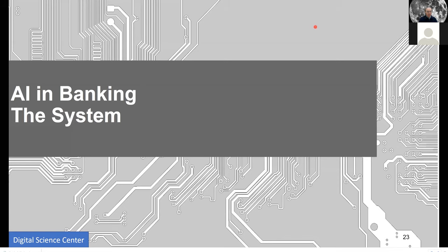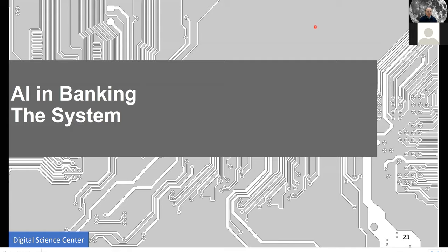In banking, we have three areas: the consumer-facing front end, the middle office — probably where the richest AI opportunities are, actually slightly bigger in AI value than the front end — and the back end, which is more of a database world with less funding. These estimates of cost savings due to AI are always pretty rough, but they illustrate where opportunities lie. In the front office, AI improves the user-bank interface. In the middle, anti-fraud systems and stock investment AI technologies come in.